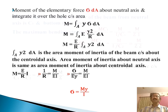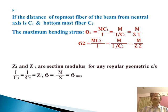If the distance of the topmost fiber of the beam from the neutral axis is c1 and bottommost fiber is c2, the maximum bending stress sigma 1 is M c1 by I and sigma 2 equals M c2 by I, where I by c1 equals z1 and I by c2 equals z2. z1 and z2 are the section modulus for any regular geometrical cross section. Finally, sigma equals M by z, that is sigma max.